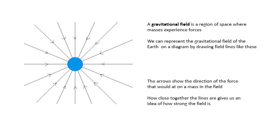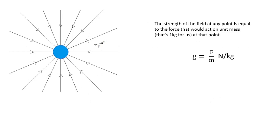How close together the lines are gives us an idea of how strong the field is. This diagram tells us that the closer to the Earth you are, the stronger the field. So, the strength of the field. What do we mean by the strength of the field?